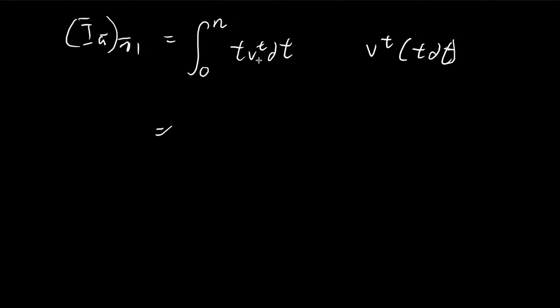So in order to solve this integral we need to use integration by parts. So first we integrate v to the power of t. So you get v to the power of t divided by natural log v. And then we differentiate t, which is just 1.